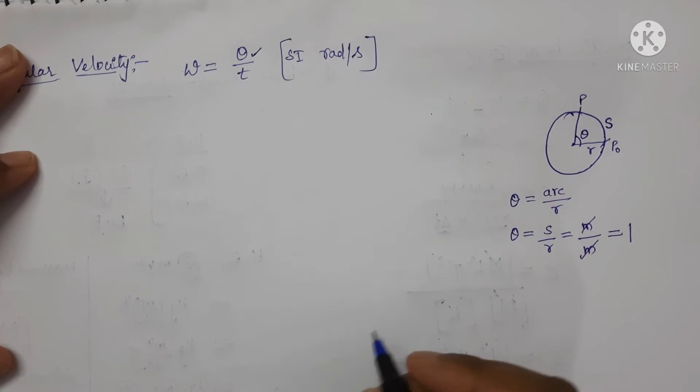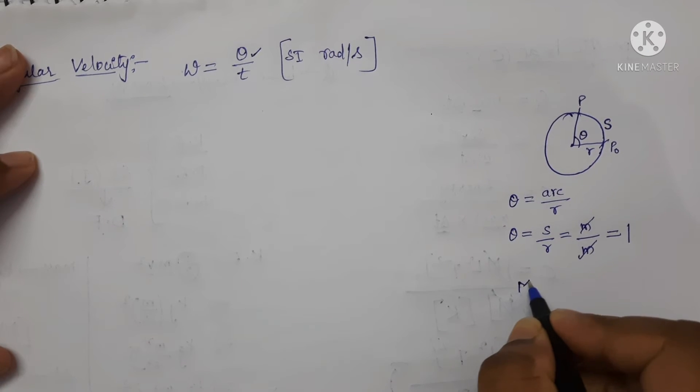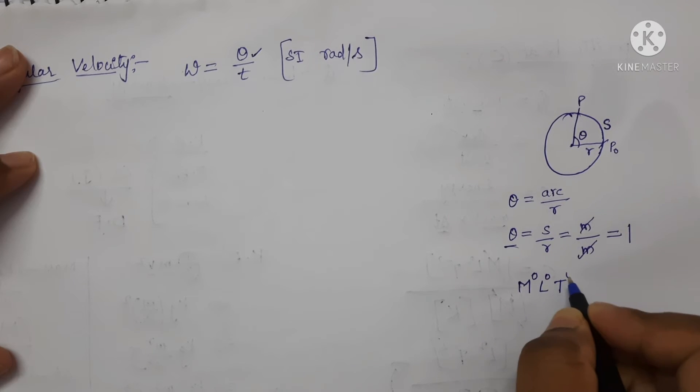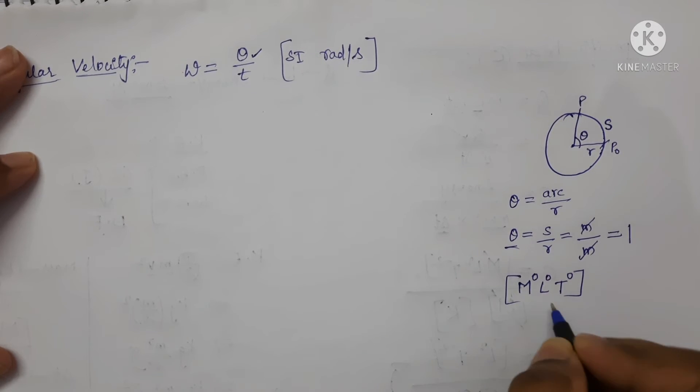So here it is 1. Now the dimensions of angular displacement is M power 0, L power 0 and T power 0. That means it is a dimensionless quantity.